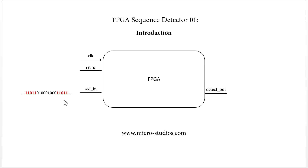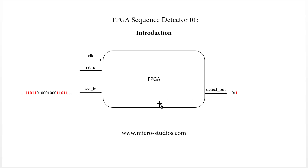For the FPGA, if we detect the bit data 11011, it will output one high level on the detected out pin. Otherwise, we will output zero low level on the detected out pin.